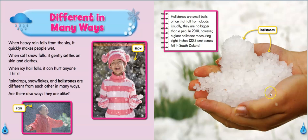Let's start here. Look at this girl's hand. That kind of looks like what Ms. Olson calls sonic ice. Hailstones are small balls of ice that fall from clouds. Usually they are no bigger than a pea. In 2010, however, a giant hailstone measuring about eight inches across fell in the state of South Dakota. Wow, that's a big hailstone.